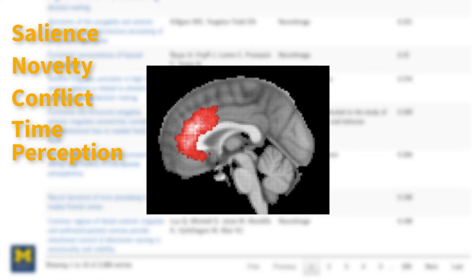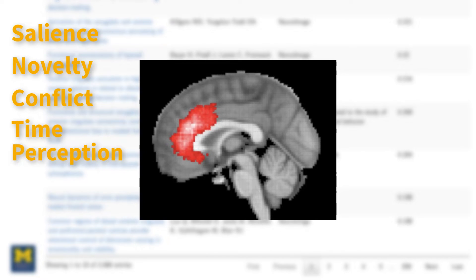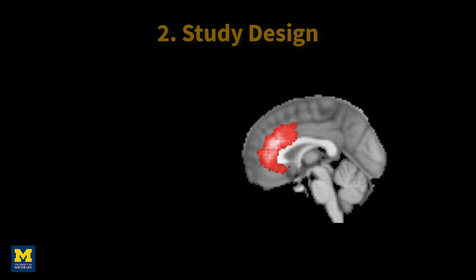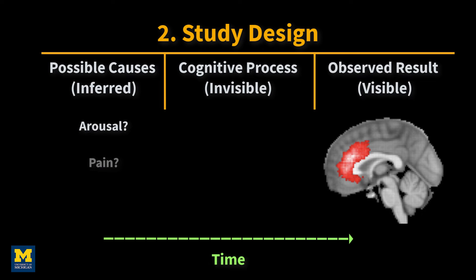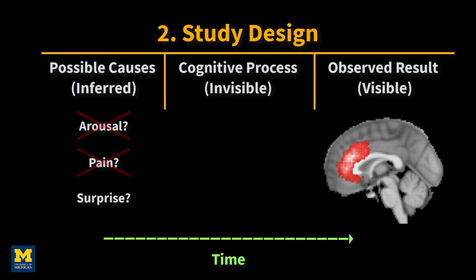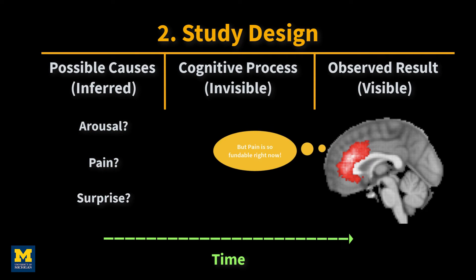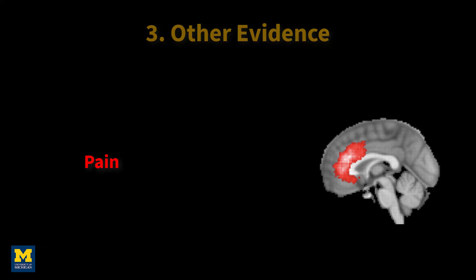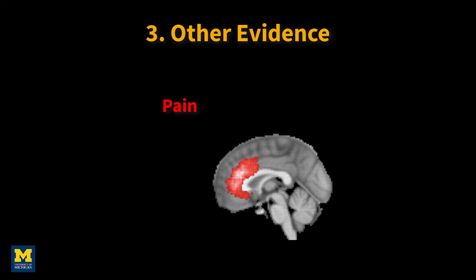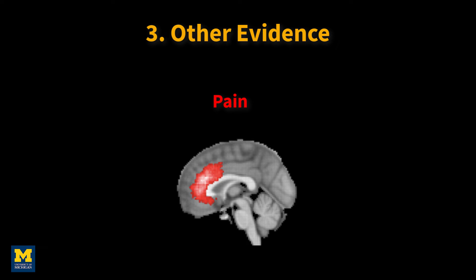Others that could be listed include salience, novelty, conflict, and time perception. The more studies that find different conditions activate a region, the less likely that region is selective for one condition and nothing else. Second, it follows that if you are making a strong claim about what an effect represents, you will need a study design that has ruled out any plausible alternatives. Otherwise, a post hoc inference will probably be biased by whatever narrative you find most persuasive — a fallacy that is common across all fields of science and in our everyday lives.